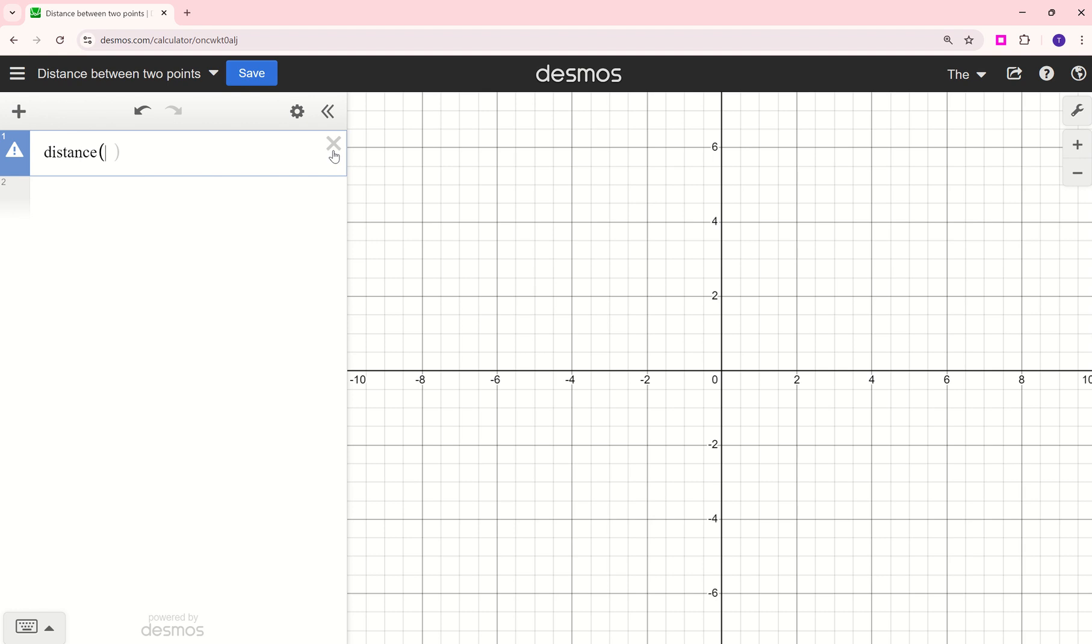So if I want to find the distance between two points, I can simply enter those two ordered pairs. There's one, comma, and then the other one. So I've entered my two ordered pairs separated by a comma. And I get the same value as before, 7 and 28 hundredths.